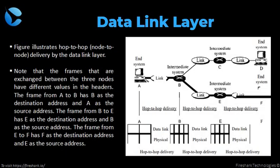This figure illustrates how hop-to-hop or node-to-node delivery works in the data link layer. Note that the frames exchanged between the three nodes have different values in the header. The figure shows how communication at the data link layer occurs between two adjacent nodes. To send data from A to F, three partial deliveries are made. First, the data link layer at A sends a frame to the data link layer at B.